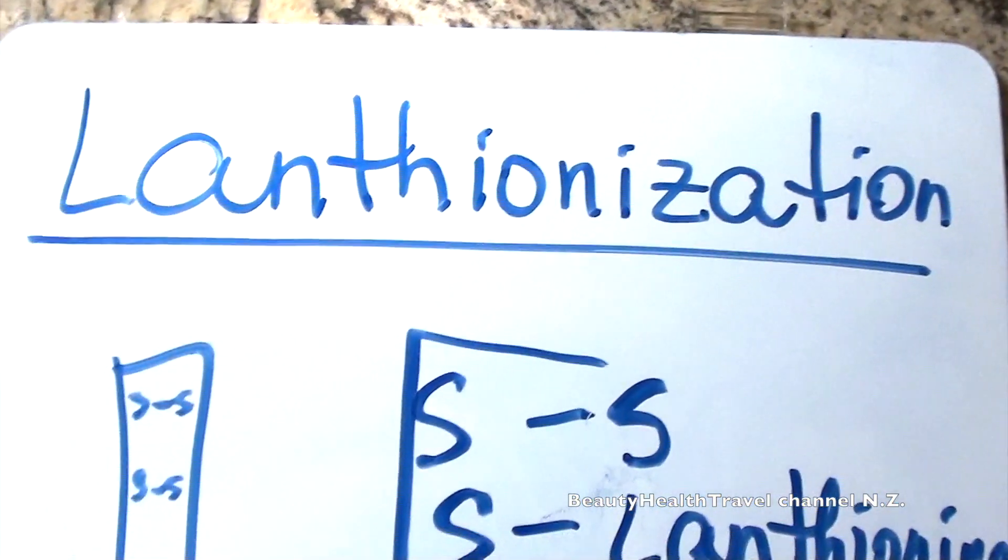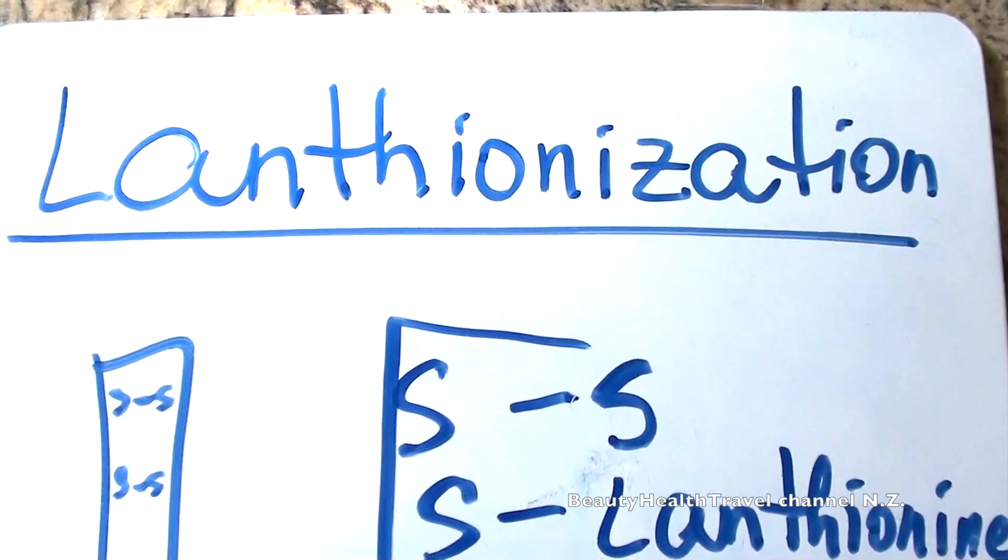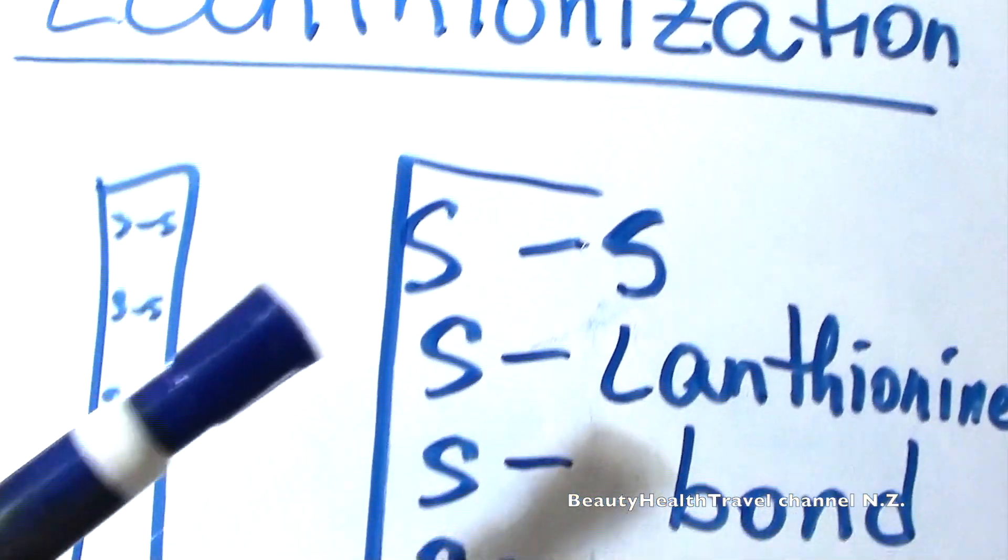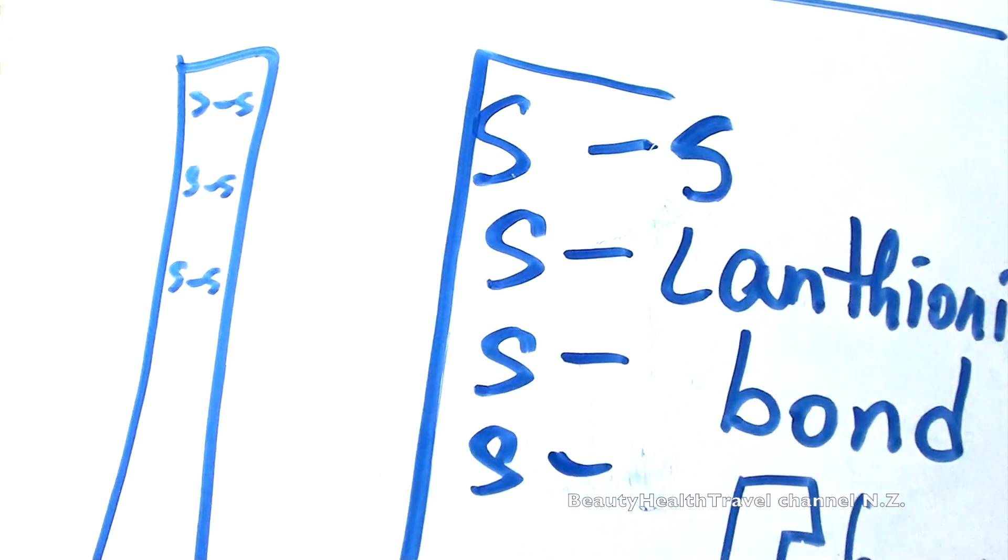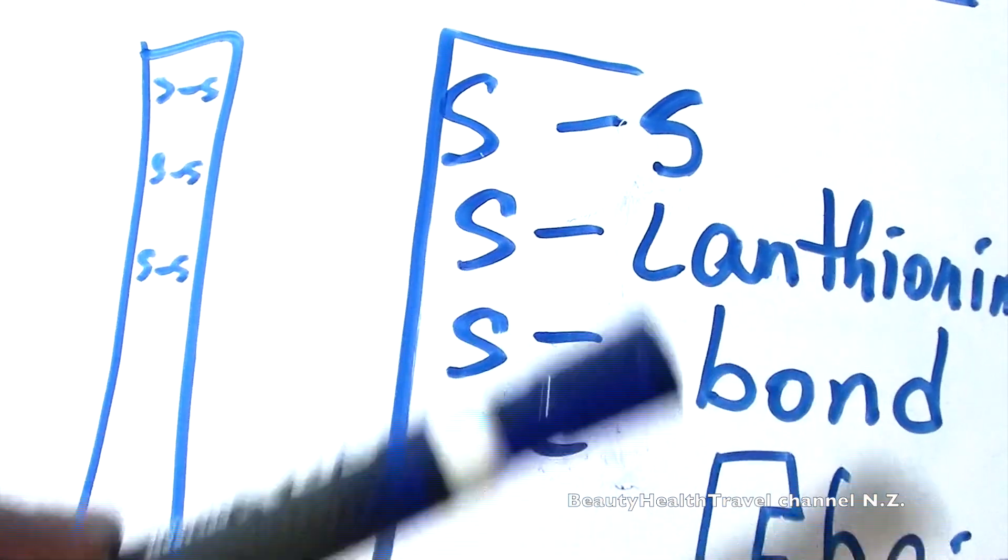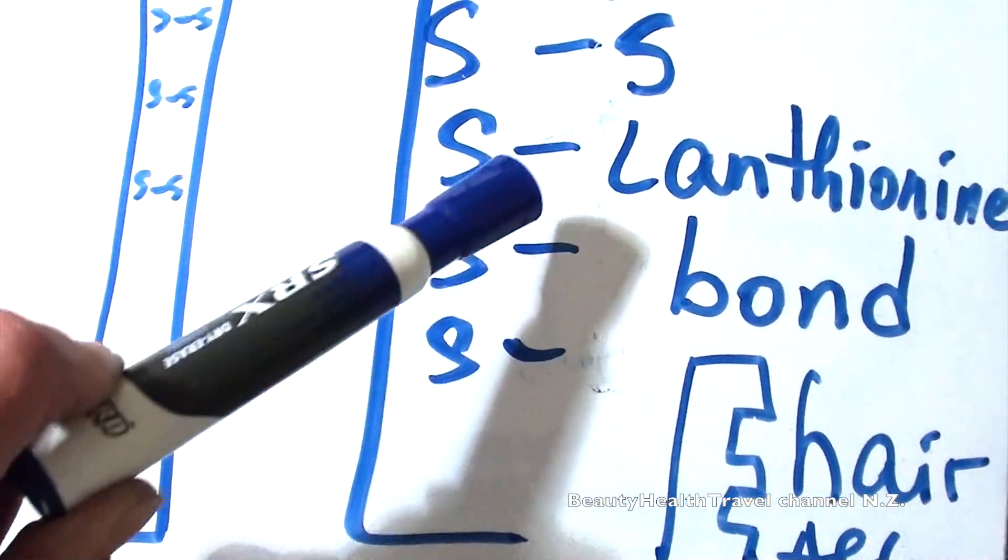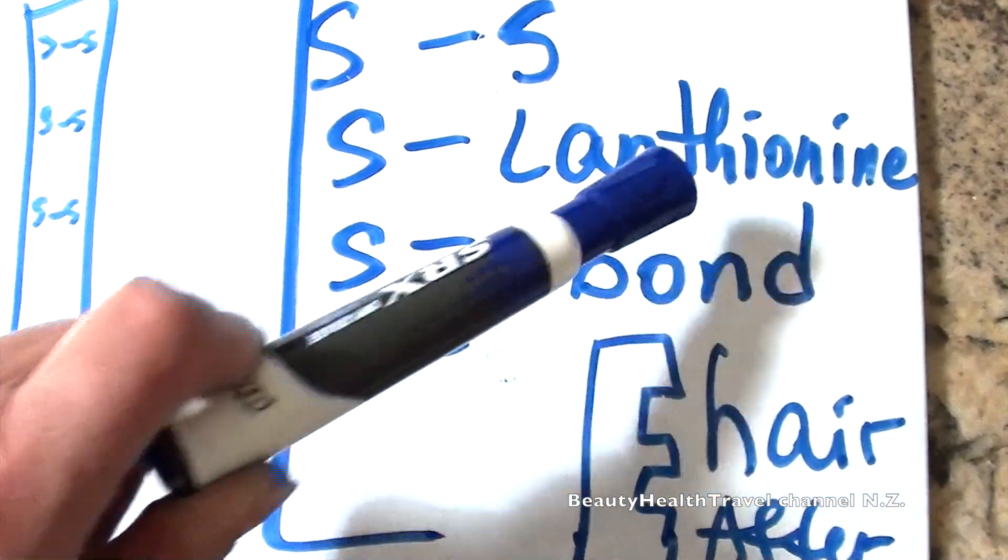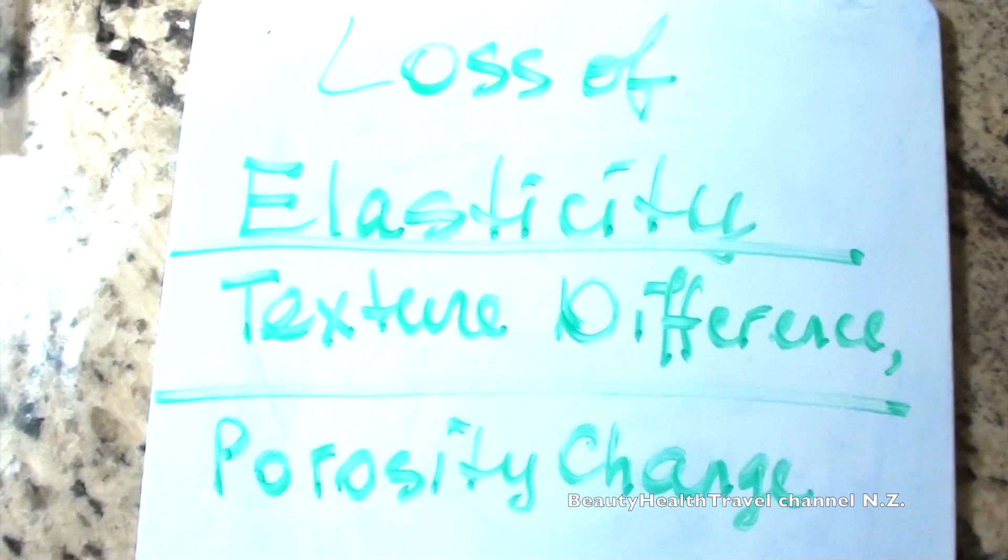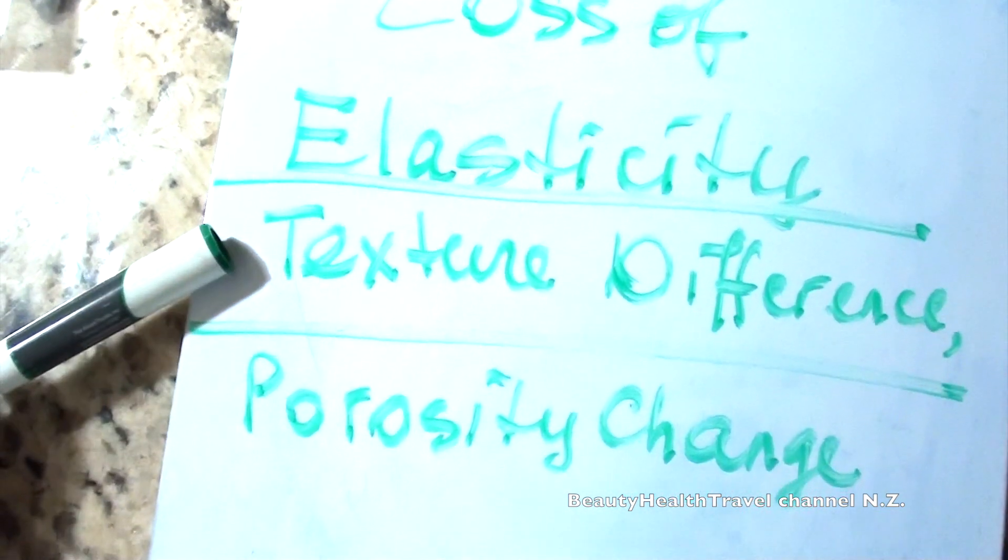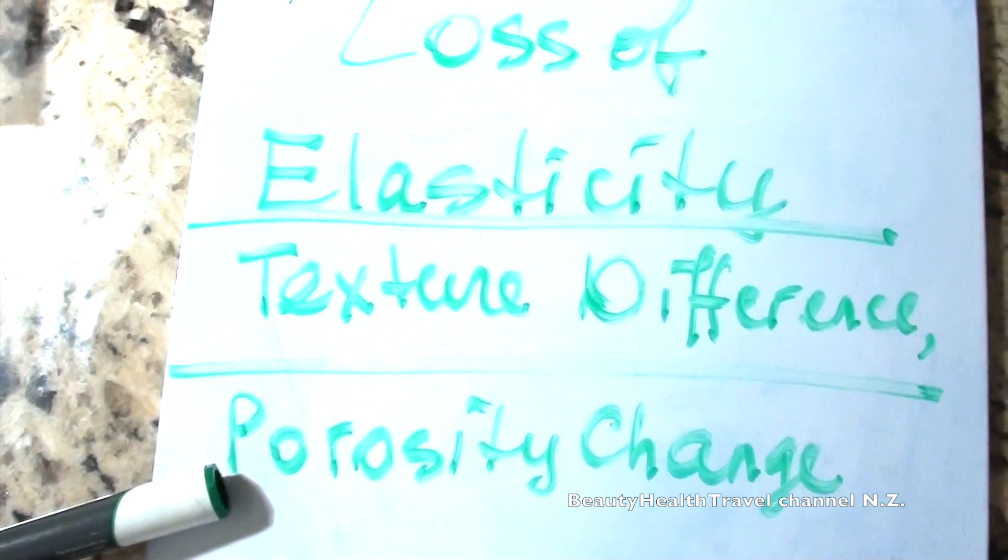So at state board, when they ask you about lanthionization, it's a process when you apply the sodium hydroxide relaxer. And when you neutralize, it doesn't completely go back connecting the two disulfide bonds, the two sulfur bonds. And the bond is empty, all of this is gone, making to a lanthionine bond. And the hair does not look like it was before. In that case, there's a loss of elasticity, there is a difference in texture, and there's a change in porosity. The hair is more porous.